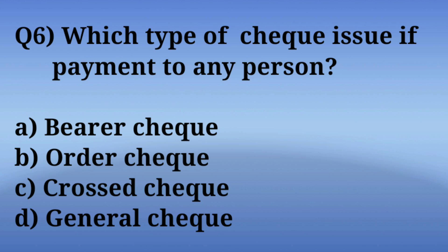Question number 6: Which type of cheque is issued if payment is to be made to any person? Options are: A. Bearer cheque, B. Order cheque, C. Cross cheque, D. General cheque. The correct answer is Option A — Bearer cheque. With a bearer cheque, payment can be made to any person. You should read the classifications of cheques in detail.